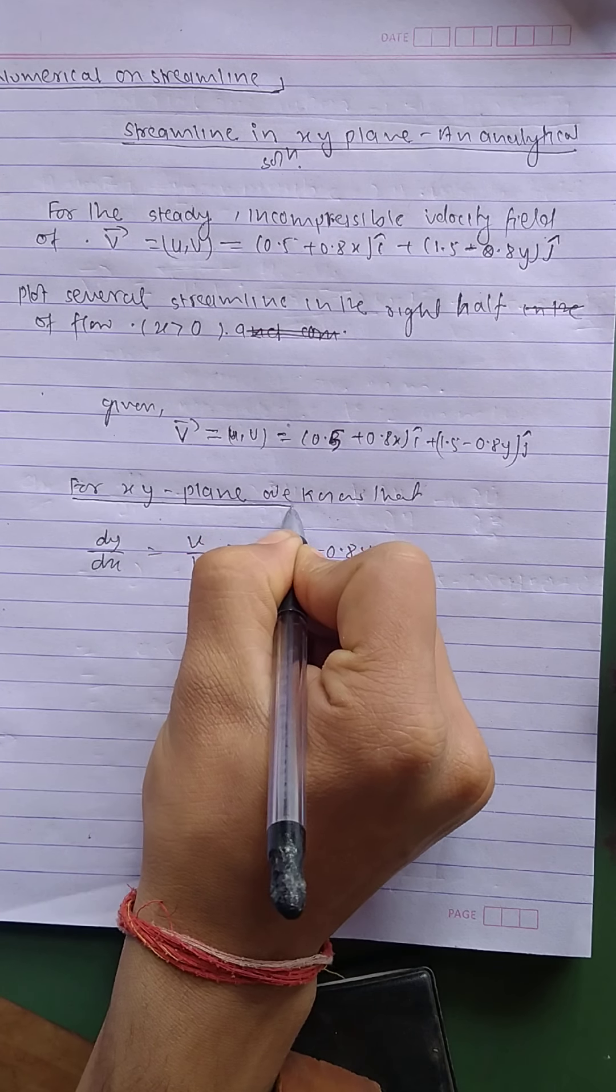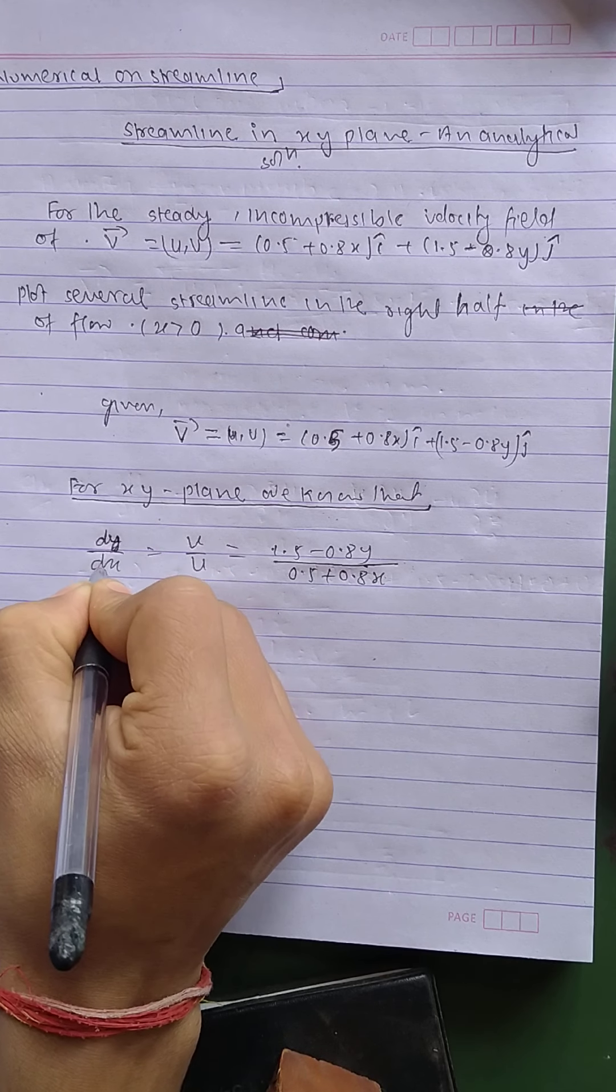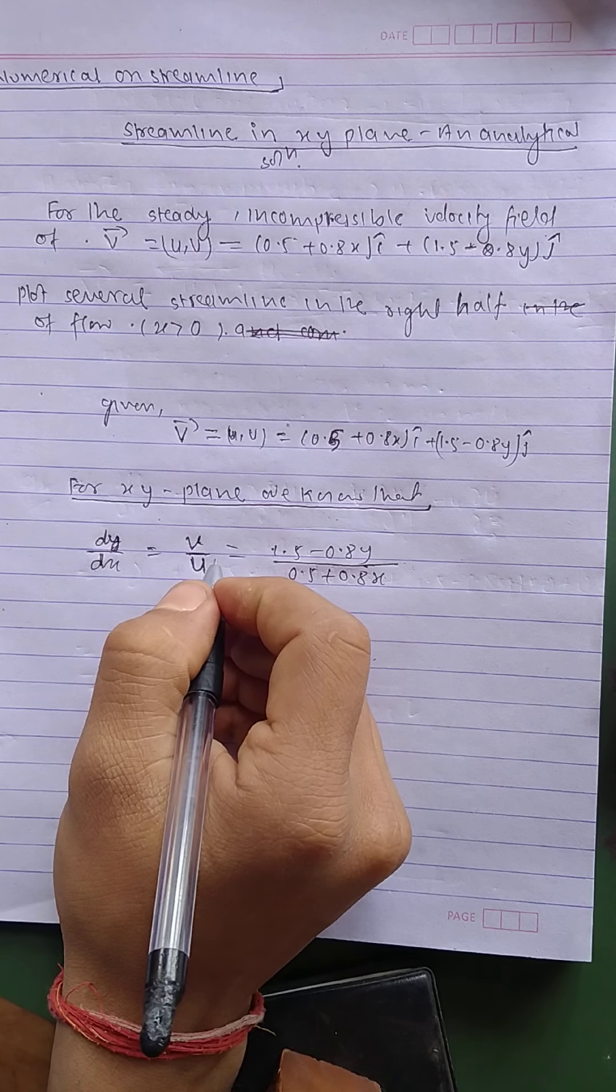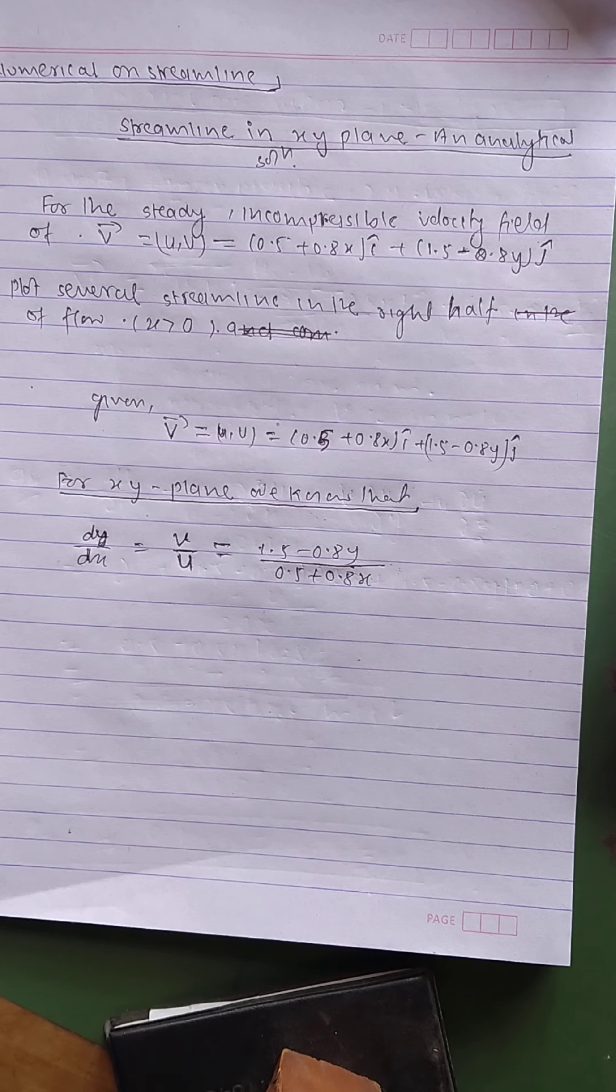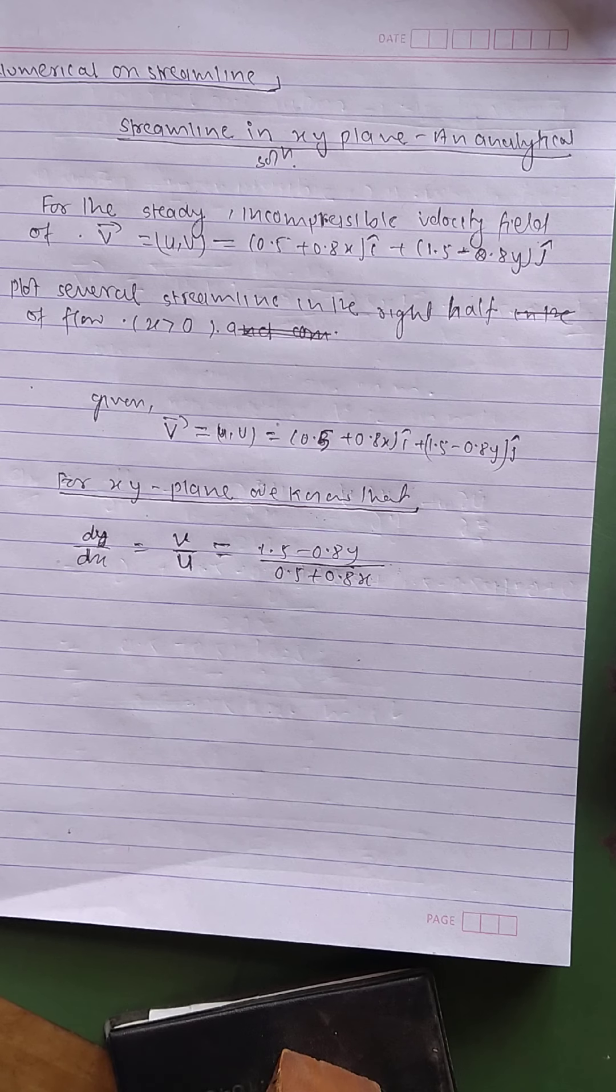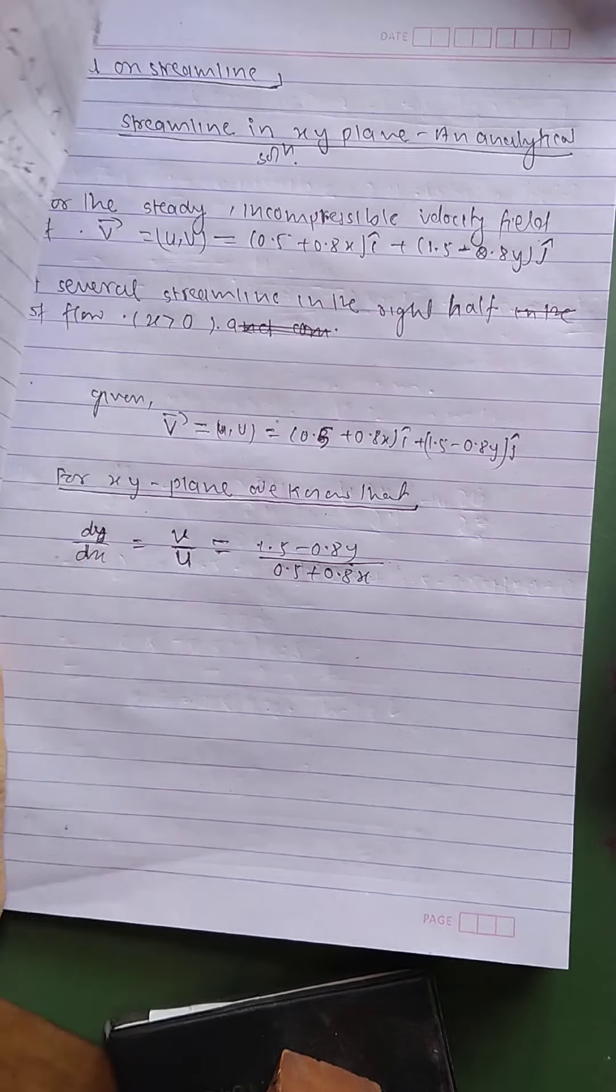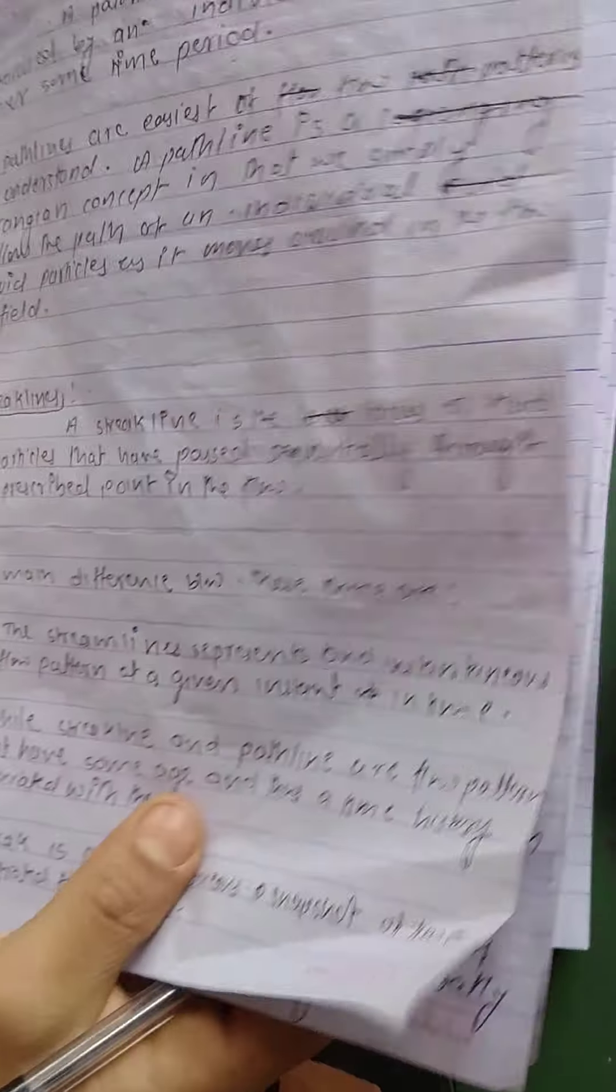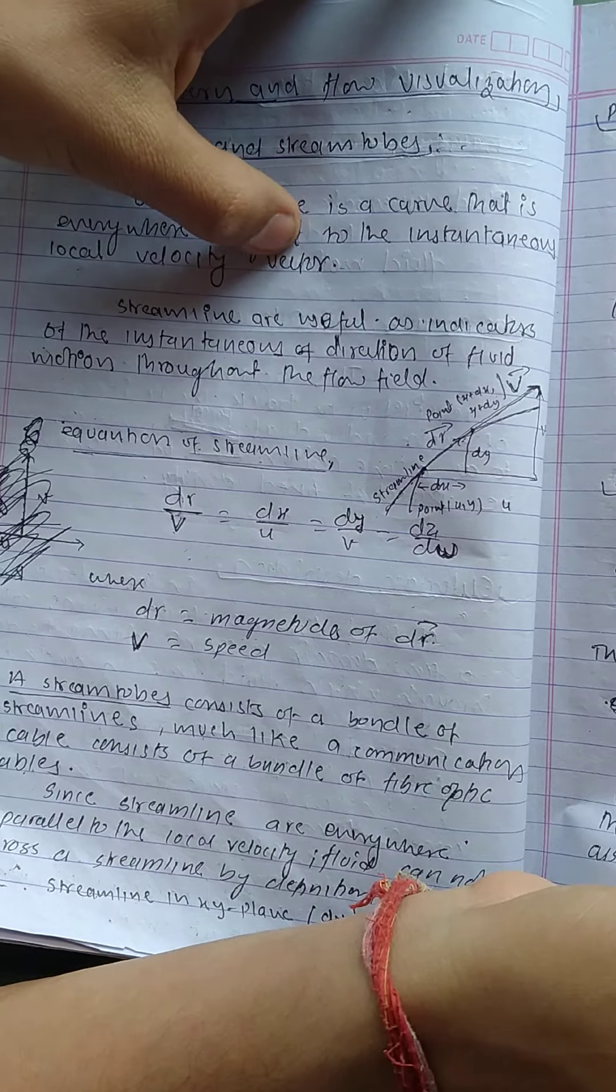For x-y plane, in case of streamline for x-y plane, we have the formula dy by dx equals v by u. Now we already know that what is the streamline. Streamline is the tangent of the velocity vector, vector of velocity field. I will give you some explanation of what is streamline.